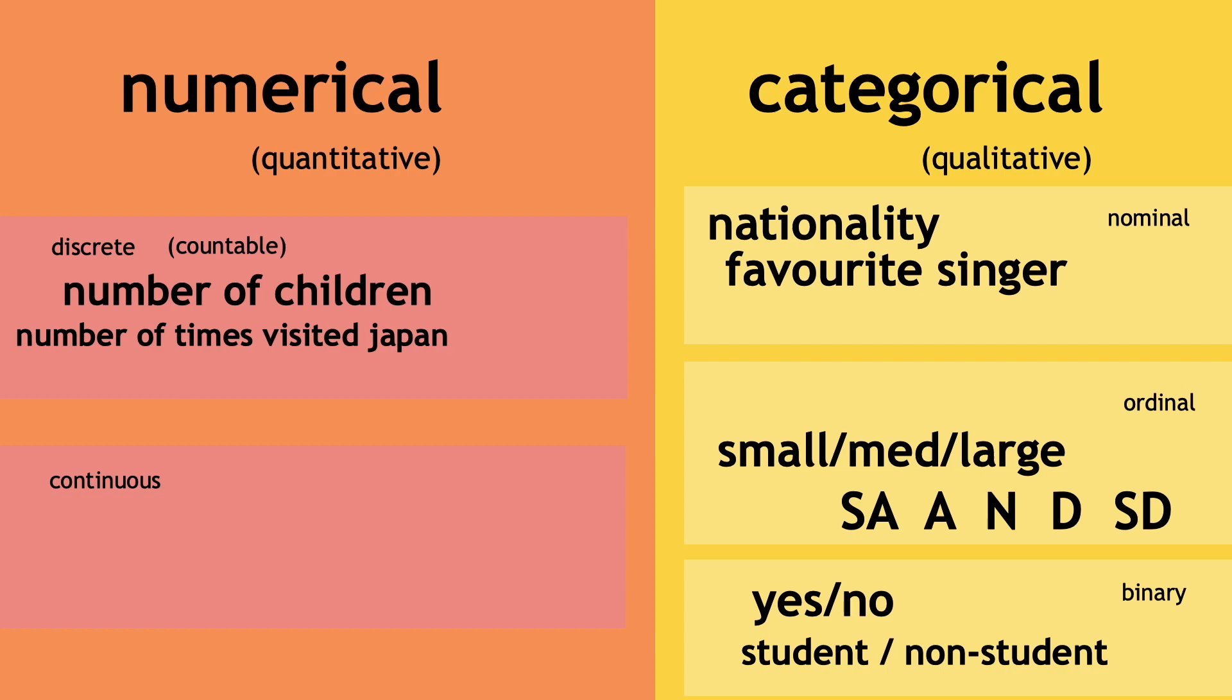It doesn't have to be whole numbers though. Shoe sizes like six, six and a half, seven are also discrete, because there's no possibility of there being a value or shoe size between two sequential sizes.